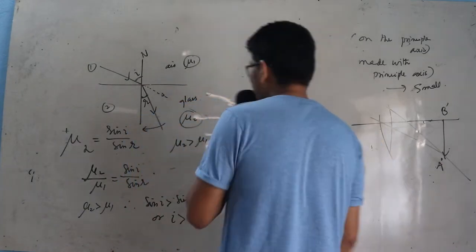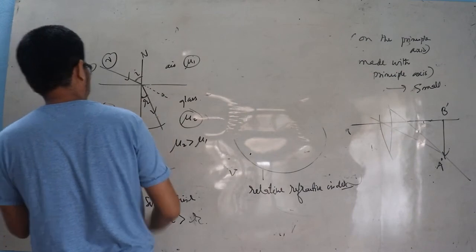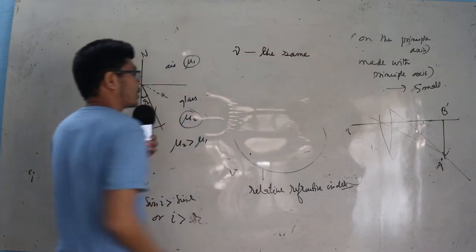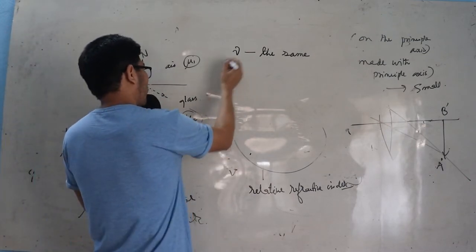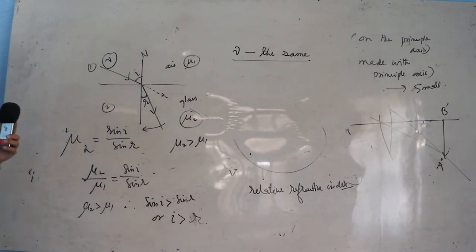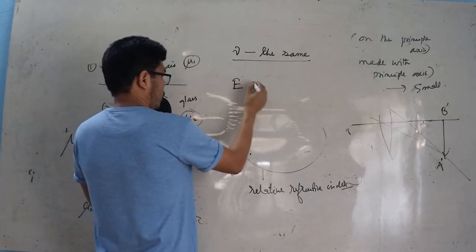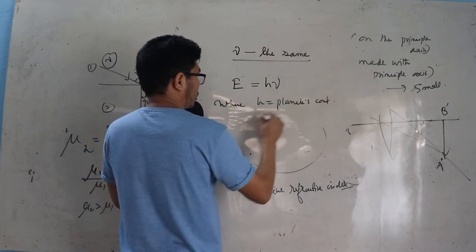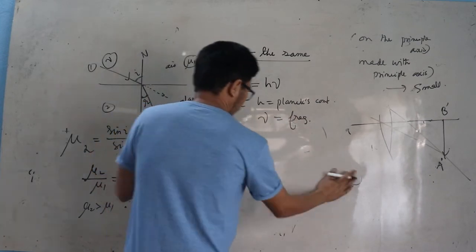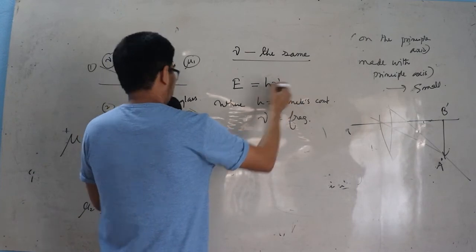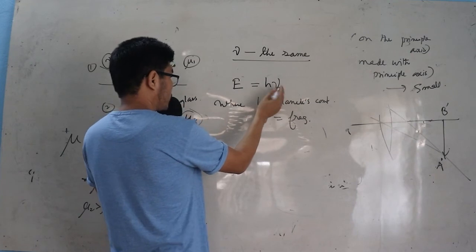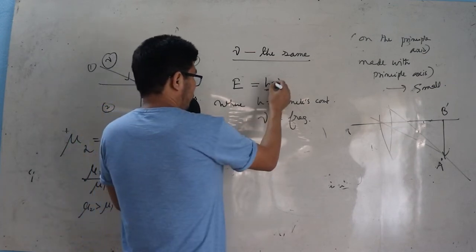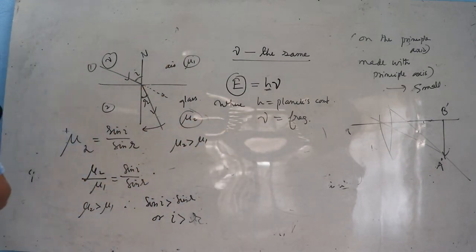Another very important point: during refraction of light, the frequency of light remains the same — this is the physical quantity that does not change during refraction. The energy of light is given by E equals h-nu, where h is Planck's constant and nu is the frequency. Since frequency does not change during refraction, and h is also constant, the energy of light does not change during refraction either.